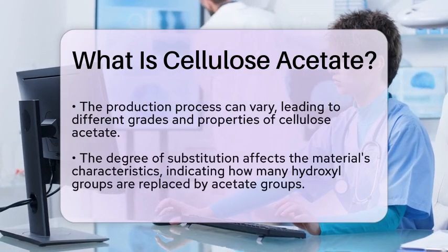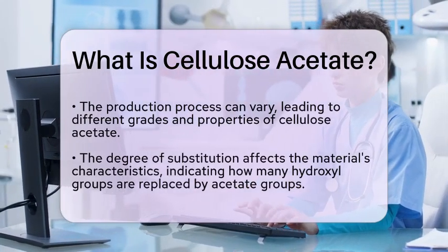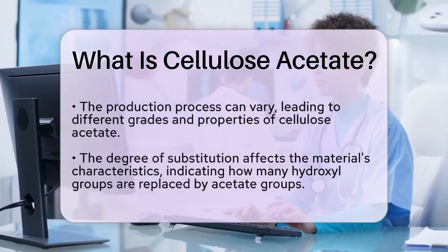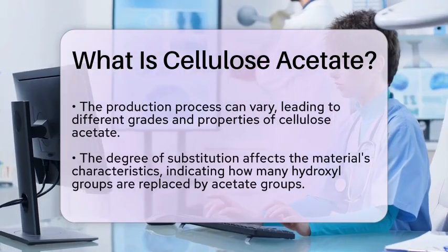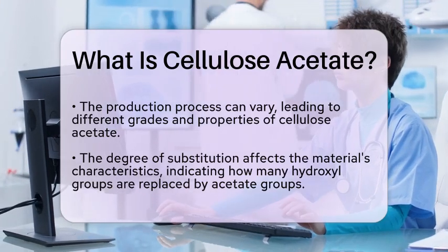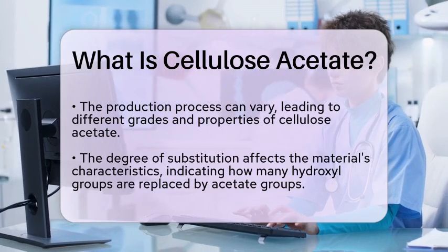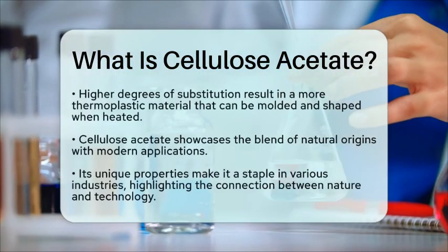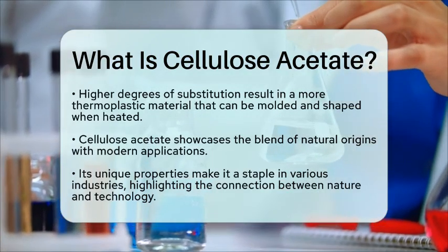The production process of cellulose acetate can vary, leading to different grades and properties. For instance, the degree of substitution — which refers to how many hydroxyl groups in the cellulose are replaced by acetate groups — can affect the material's characteristics. Higher degrees of substitution typically result in a more thermoplastic material, which means it can be molded and shaped when heated.